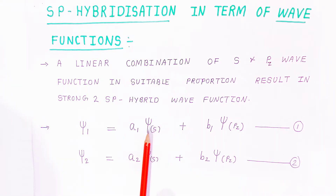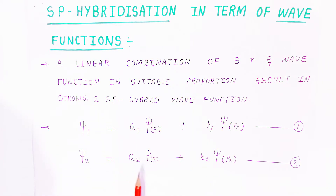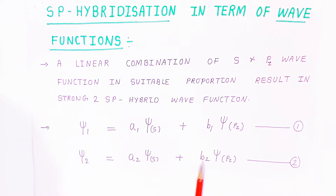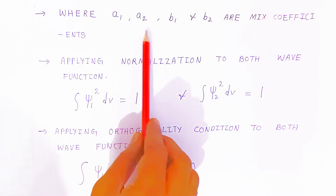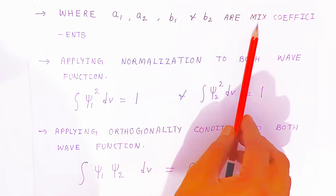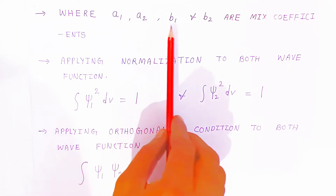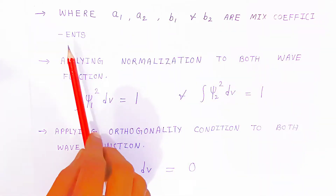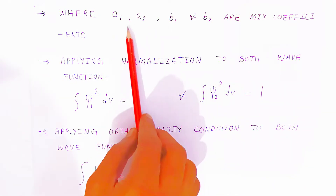We are going to find the coefficients: before ψS there is A₁, and before ψPZ there is B₁ for the first SP hybrid wave function. For the second wave function, before ψS you have A₂ and before ψPZ you have B₂. A₁, A₂, B₁, and B₂ are called mixing coefficients — they decide how much mixing has occurred.